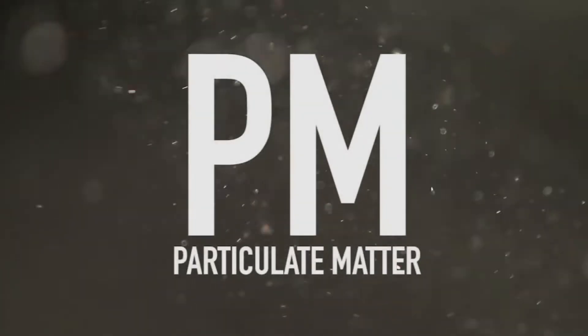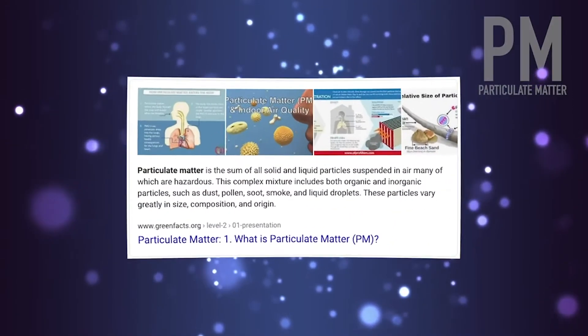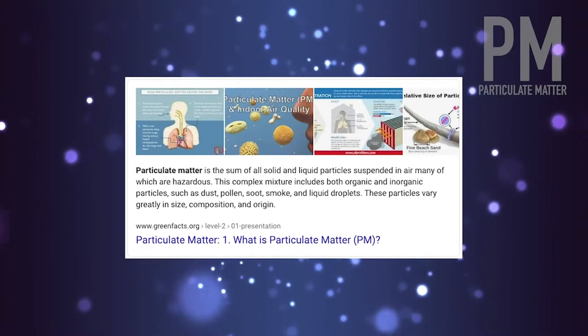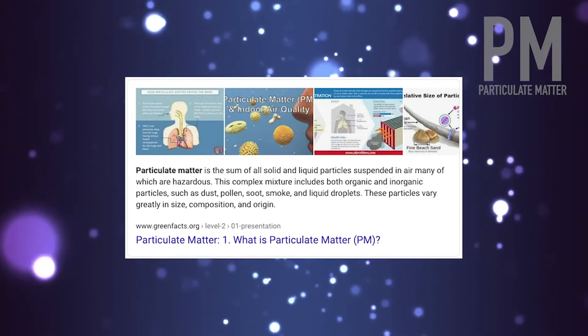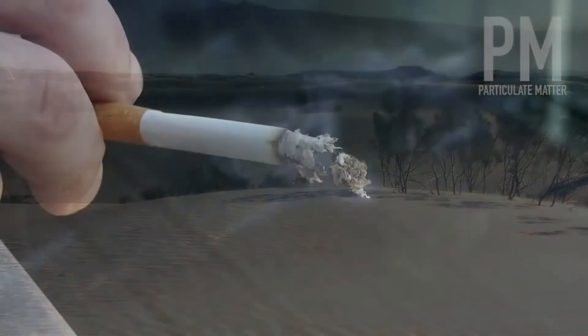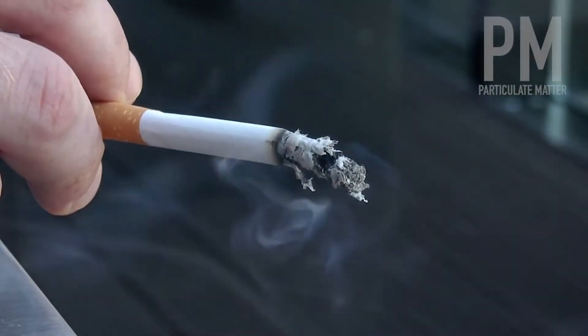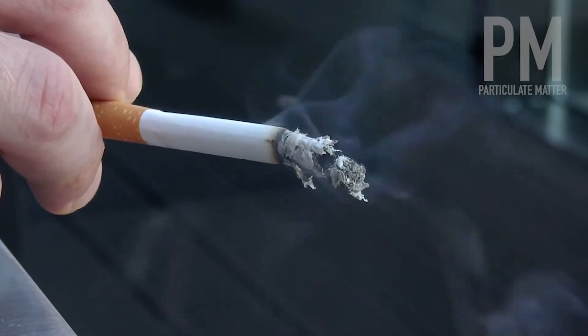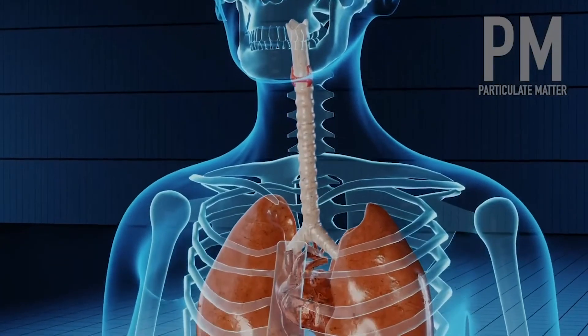The next thing we need to discuss is particulate matter, or PM. It's generally made up of particles that are less than 10 micrometers in size. These particles can include chemical compounds such as nitrates or sulfates, and can even be made up of dust from machinery or naturally occurring dust storms. Cigarette smoke and other forms of incomplete combustion create an excess of particulate matter. These particles can go deep into the lungs and enter the bloodstream, causing damage to several different organs.